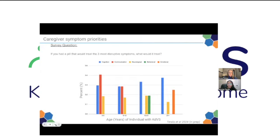Main takeaways: there are no clear differences in symptoms between individuals with KAT6A variants versus microdeletion — consistent with the literature and confirmed in Ananya's tables. That's primarily why the pie charts for cardiac, breathing, immune, and urogenital problems showed only one chart, as there were no significant differences between the two variant groups.